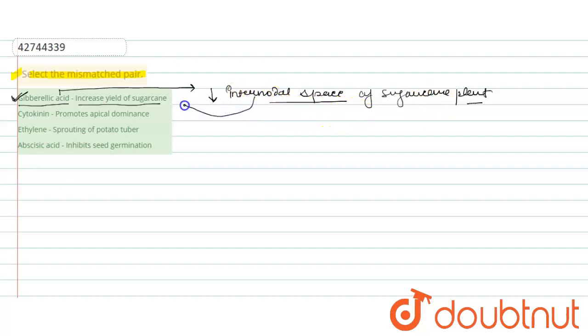Now come to the second one. We have cytokinin and their function is given as 'promotes apical dominancy.' So let's understand about what is apical dominancy.